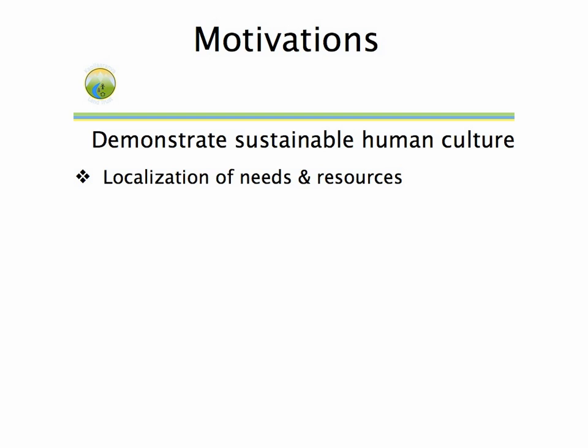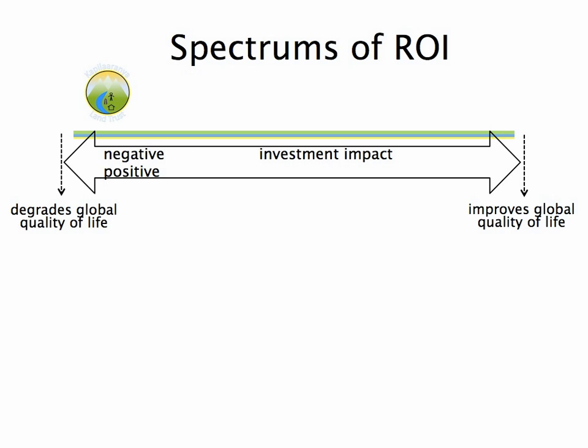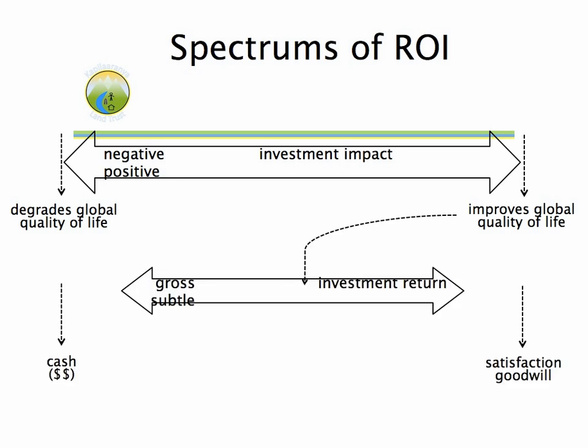Since we're talking about economic motivation, it's worth dwelling on that a little bit. The spectrum of return on investment can illustrate this. The impact that any investment makes can range from negative to positive in terms of the effect it has on the local community. From the positive end, we also have a range of investment return from gross — which is essentially cash — to, on the other end, satisfaction and goodwill, which is philanthropic. It's what's in the middle of that range that's relevant to the land trust: the relationships that you, as an investor of your money, time, and effort, gain that satisfy your material needs and wants. That's the return on investment that's core to this concept.